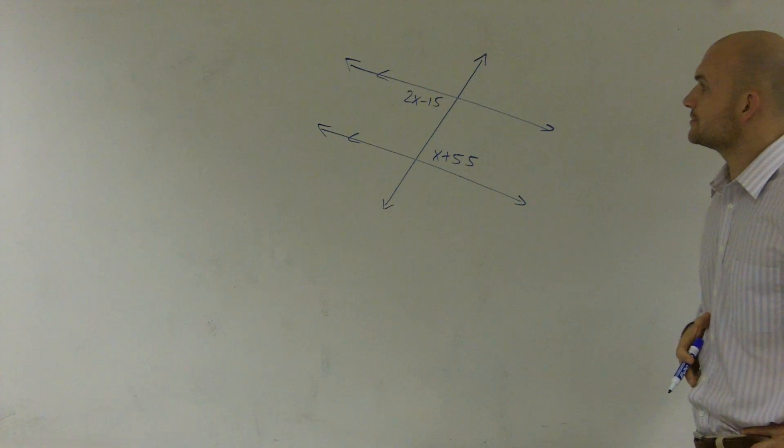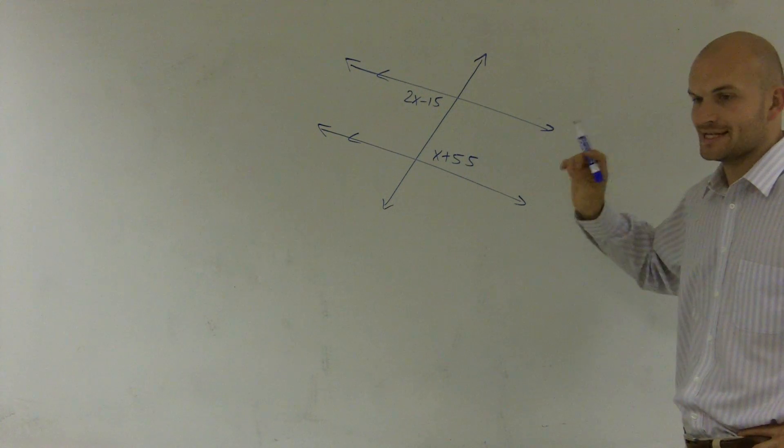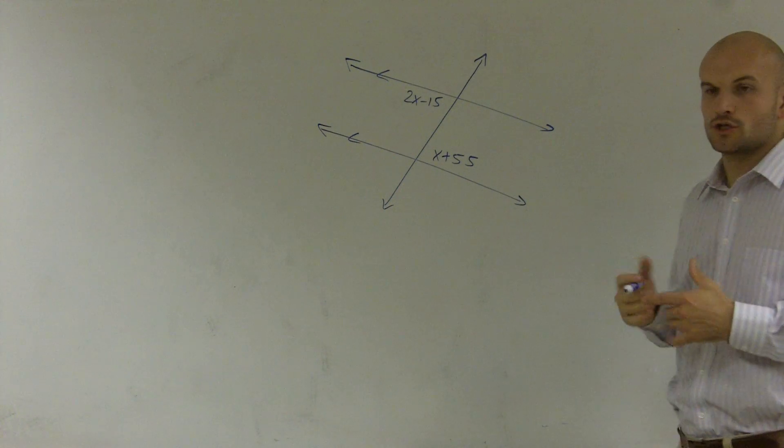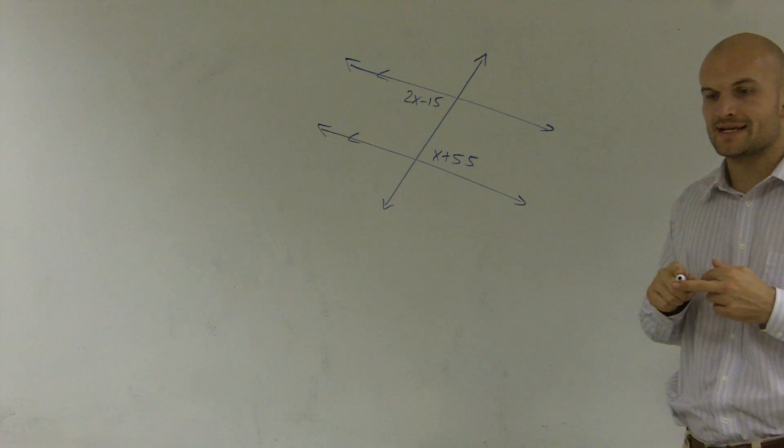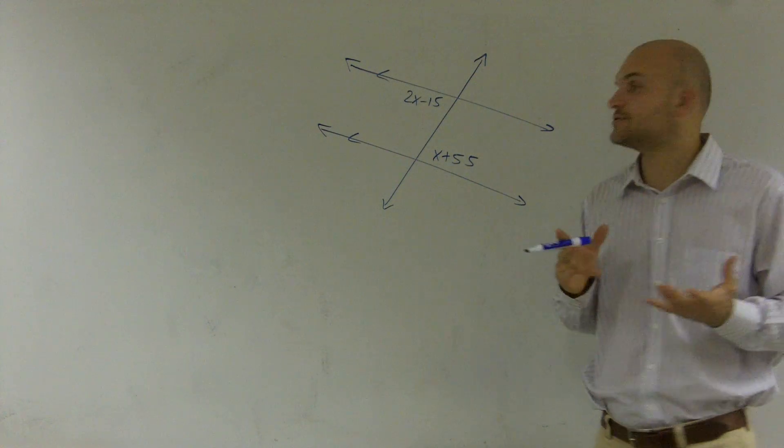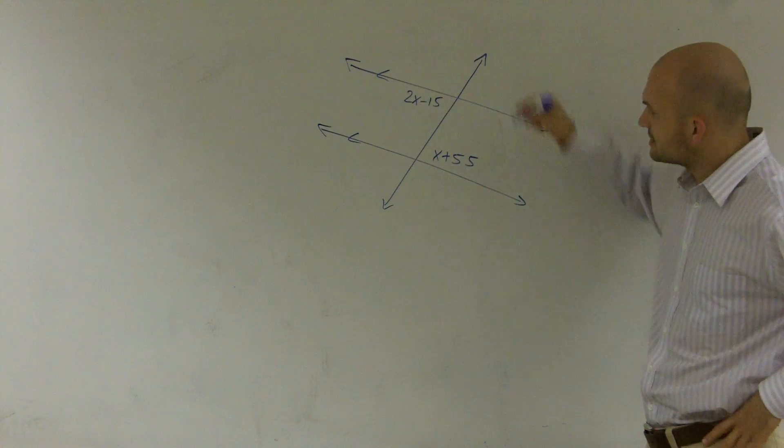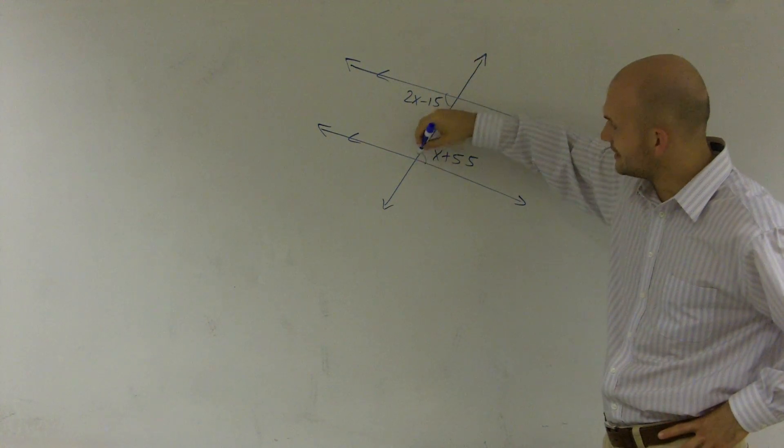Whenever you have two angles with parallel lines and a transversal, we need to look for our clues that they're alternate interior, alternate exterior, or corresponding angles. Those will all give you a clue how they're related to each other. And here what I notice is these two angles are alternate interior.